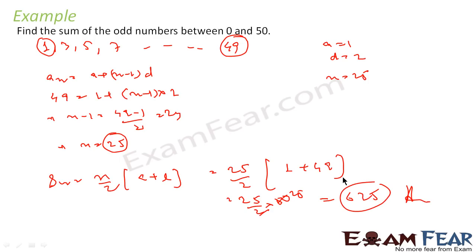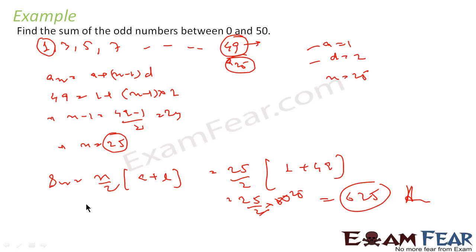Very simple. The series is 1, 3, 5, 7 till 49. We did not know N; we knew A and D. So we used the formula A_n = A + (N−1)D with A_n = 49 to find N = 25 — so 49 is the 25th term. Since there are 25 terms and we knew both the first and last terms, we used S_n = N/2 × (A + L) to get the sum.